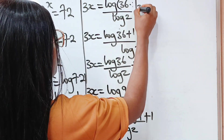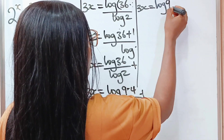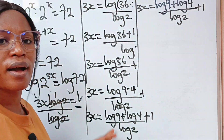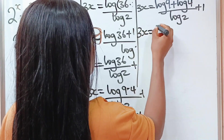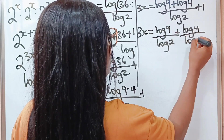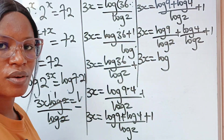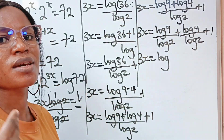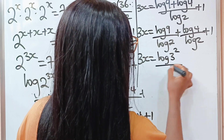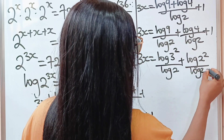So what we have here is 3x is equal to log 9 plus log 4 divided by log 2 plus 1. Now, 9 can be expressed as 3 squared, and 4 can be expressed as 2 squared. So we can write this as log 3 squared divided by log 2, plus log 2 squared divided by log 2, plus 1.